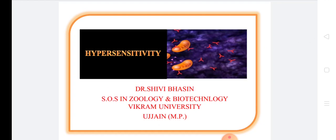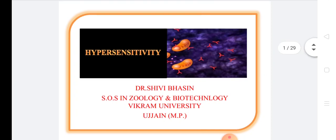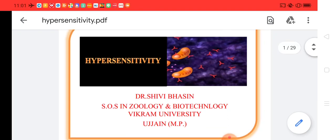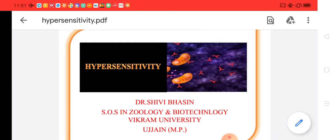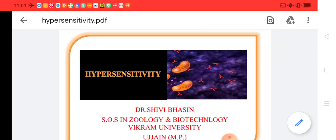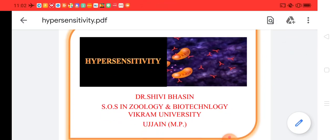Hypersensitivity is actually a combination of 3 to 4 topics. In some MSc syllabi, universities split it up — Type 1, Type 2, Type 3, and Type 4 hypersensitivity are taught separately, while in other places it's just covered as one topic called hypersensitivity. I will cover all types properly across multiple lectures. Please comment if you have questions or want a particular topic covered.